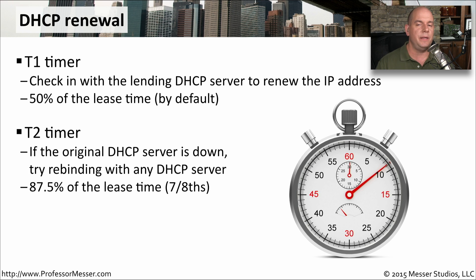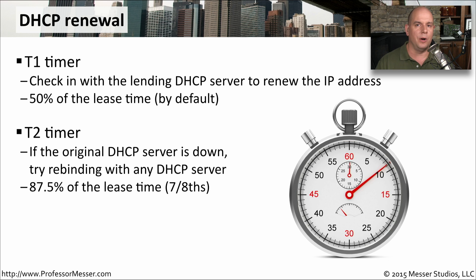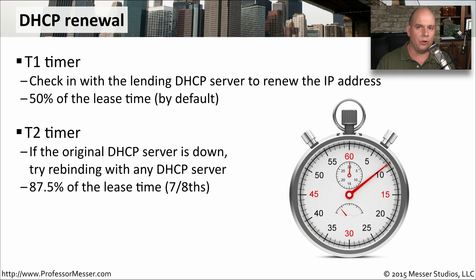But what if the DHCP server isn't there anymore — what if it goes down or there's a problem communicating to it? This is where we use the T2 timer. If that first server is down, we're going to try communicating with any DHCP server on the network, but we're going to wait past the 50% mark, past 60, past 70, all the way up to 87.5% of the lease time — that's seven-eighths. We're waiting almost until the end in the hopes that the original DHCP server will come back on the network or be available again.